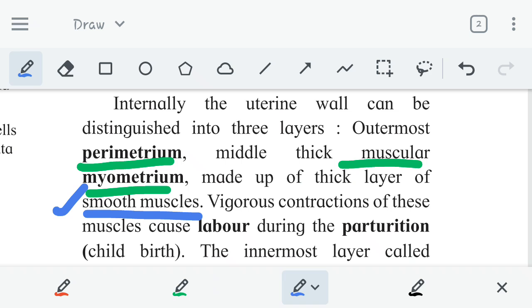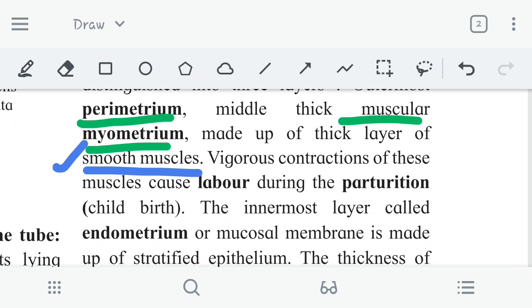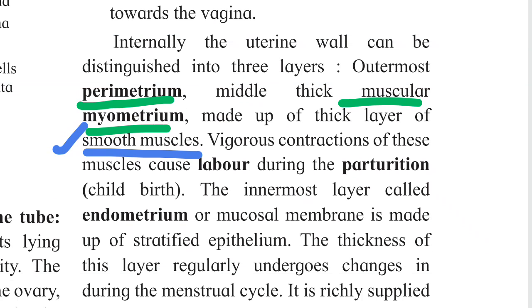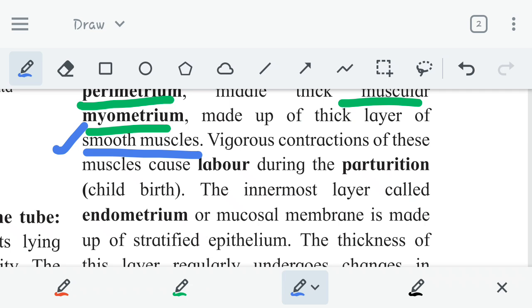Vigorous contraction of these muscles causes labor during parturition. When the birth process happens, it causes labor. This middle layer which is relatively thick and made up of smooth muscles actually contracts. This is a very important and critical role which it is playing during parturition. When child birth happens, this is the middle layer myometrium which gets contraction, vigorous contraction, which actually helps the baby, helps the fetus to come out of the uterus through the cervix.